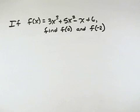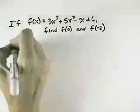If f of x equals 3x cubed plus 5x squared minus x plus 6, find f of 0 and f of negative 2.